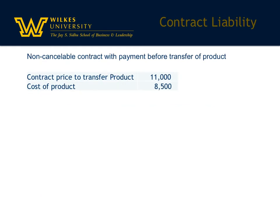A contract liability arises because the contract specifies that it is non-cancelable. As soon as the cash is received, the company transferring or selling the product has a liability — an obligation to deliver the product. In this case, the sales price to transfer the product is $11,000 and the cost of the product is $8,500.